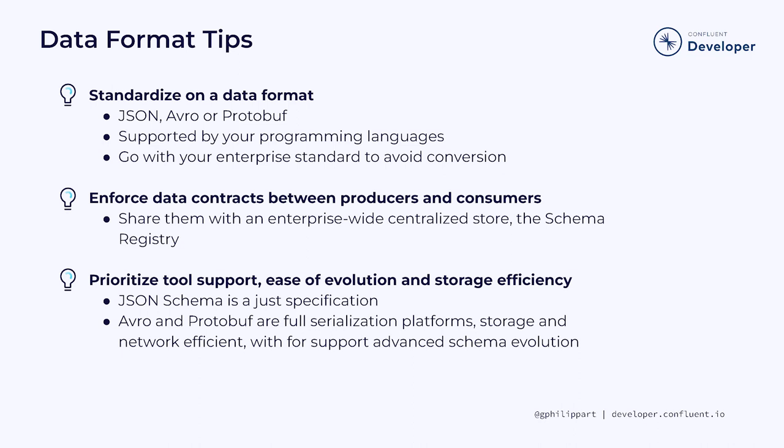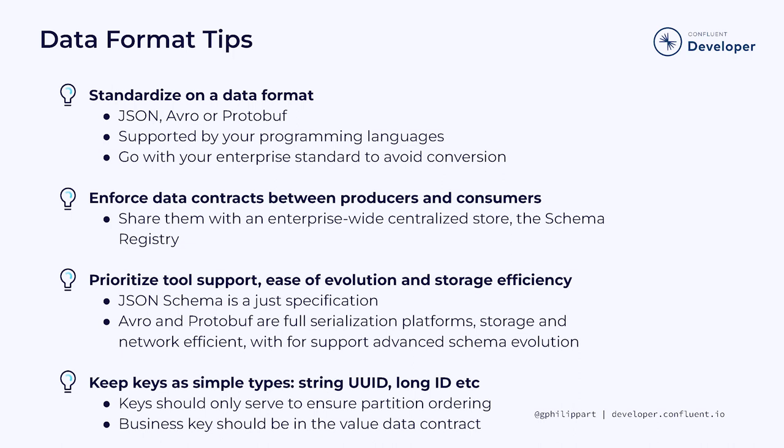JSON schema is really just a specification. In our view, Avro and Protobuf come out on top. They are both binary formats that offer a number of advantages over JSON — they are more compact, which means they take up less storage space and can be transmitted more quickly over a network. They also support schema evolution, meaning you can tweak the structure of your data without breaking existing code. We recommend keeping the key as simple types like a string UID or a long ID. Keys should only serve to ensure partitioning, and the business key of the object should be in the value data contract. Note that Avro does not guarantee deterministic serialization for maps or arrays, and Protobuf and JSON schema formats do not guarantee deterministic serialization for any object, so using those as keys could break partitioning.